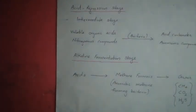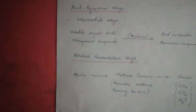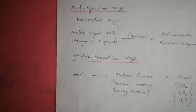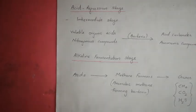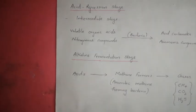The next stage is the acid regression stage, which can be called the intermediate stage. In this stage, the volatile acids and nitrogenous compounds are attacked by bacteria and converted into acid carbonates and ammonia compounds. The pH value rises to around the 6.8 range.